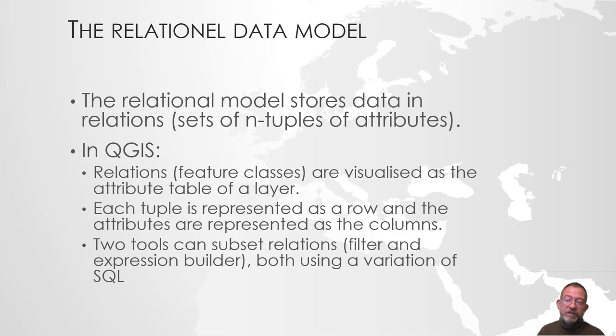In QGIS, relations or feature classes or tables are visualized as attributes of tables and their representation on the map. So here, each tuple, each feature if you wish - road, municipality, so on - is represented as one row. And the attributes of the features are represented as the columns.